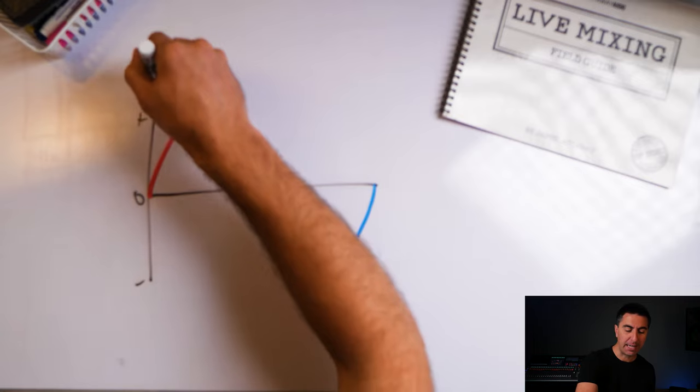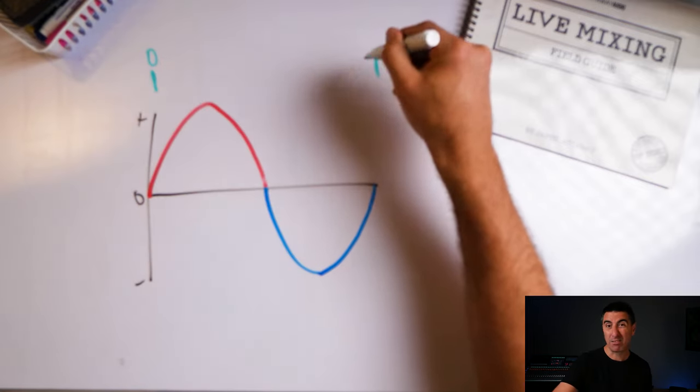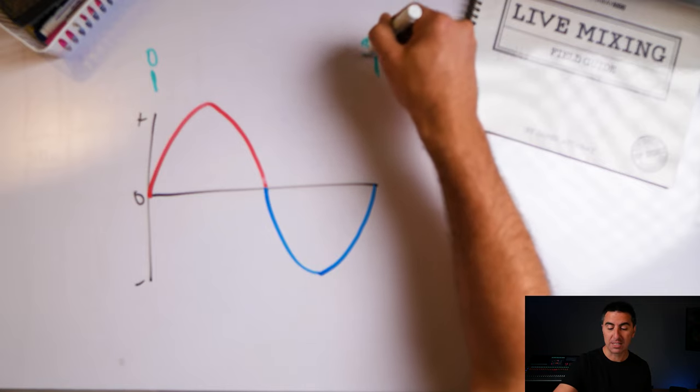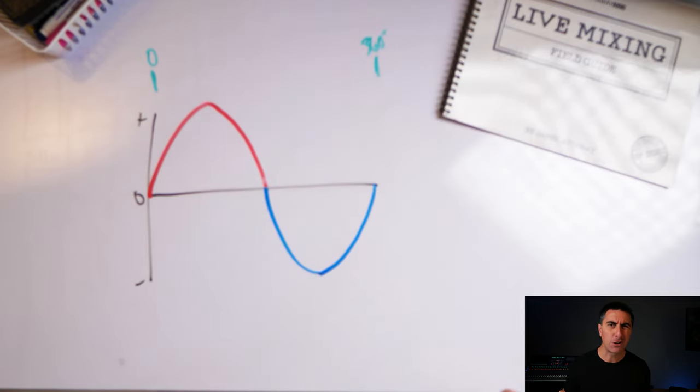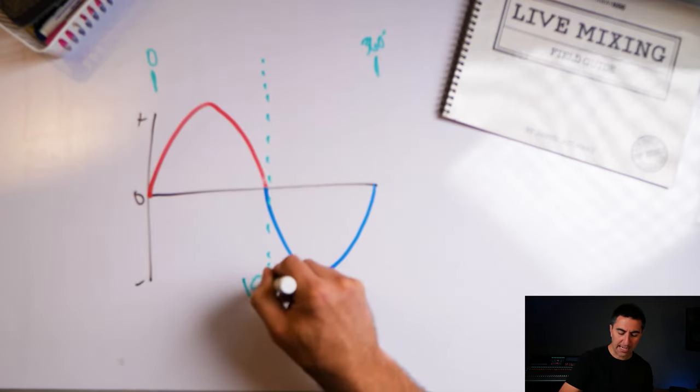We're going to divide this sound wave into different sections because it's going to behave differently with other sound waves depending on how they interact. We take the entire wave and divide it into degrees. At the very beginning we have zero degrees, and at the end we have zero again — or 360 degrees — but it starts over, so it's the same thing.